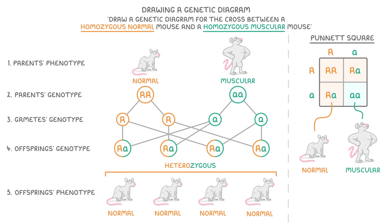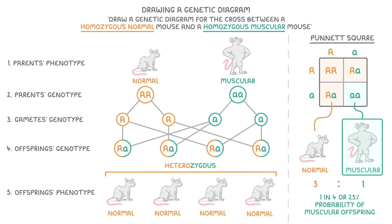You might sometimes be asked to write the outcome of genetic crosses as a ratio or probability. In this case, we'd say that we have a 3 to 1 ratio of normal to muscular mice, or we could say that there is a 1 in 4, or 25% probability of having muscular offspring.